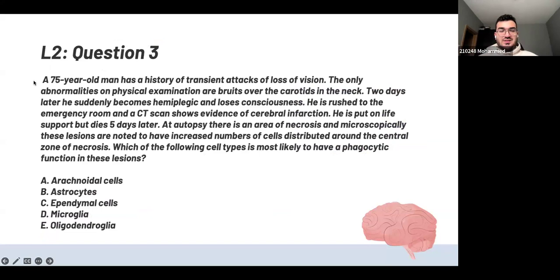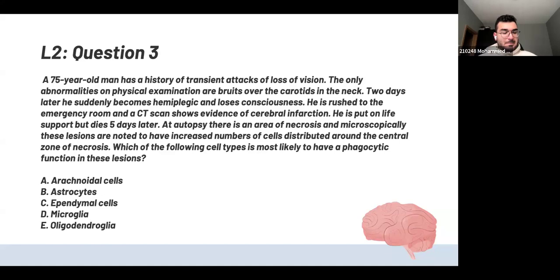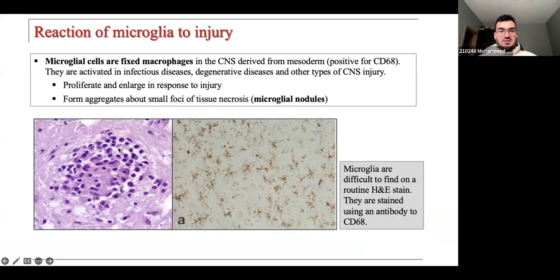The next question is a big one but you only need one word for the answer. If you see a really long question, read the last sentence — the question is probably there. The answer is microglia. Microglia are basically the macrophages of the CNS — they're fixed macrophages in the CNS. Whenever a question asks you about phagocytosis in the CNS, the answer is microglia cells.